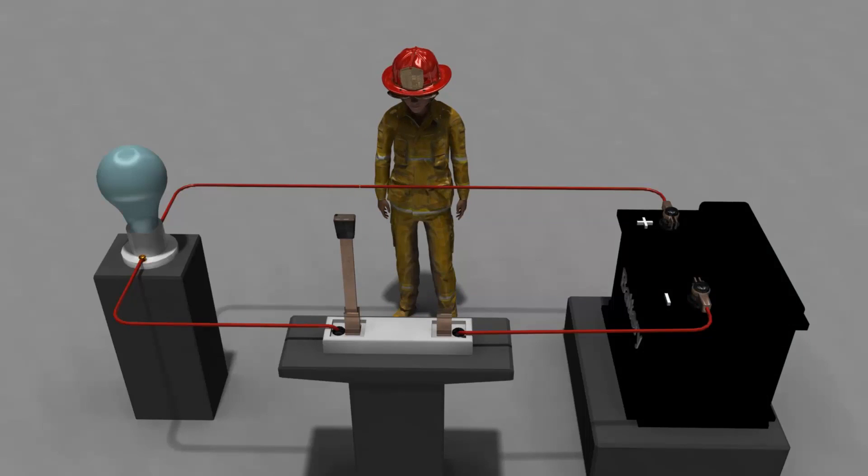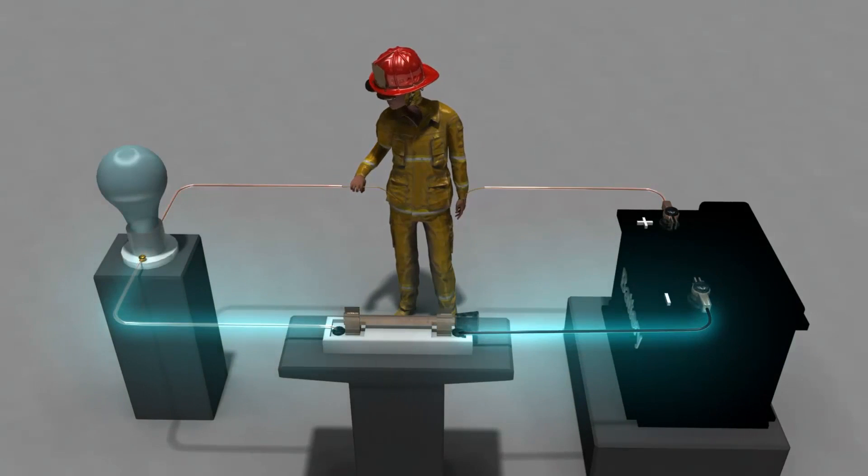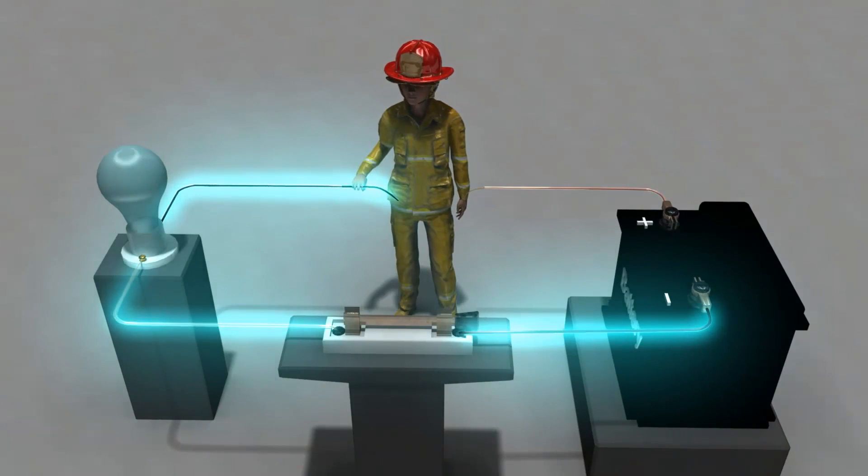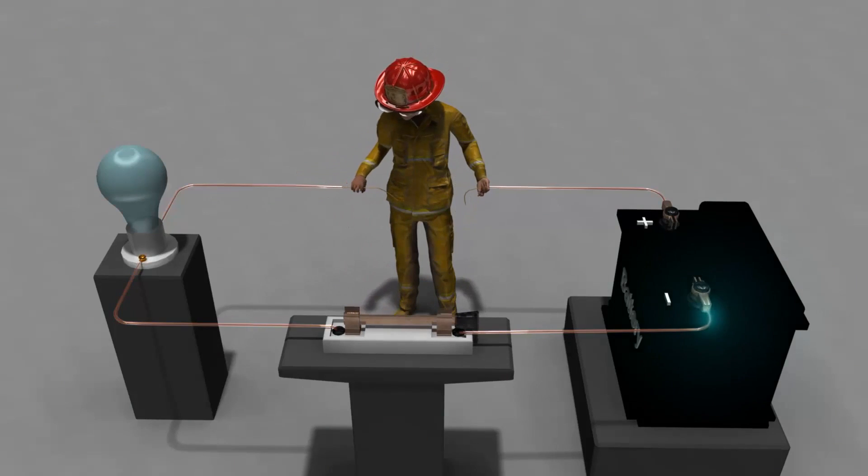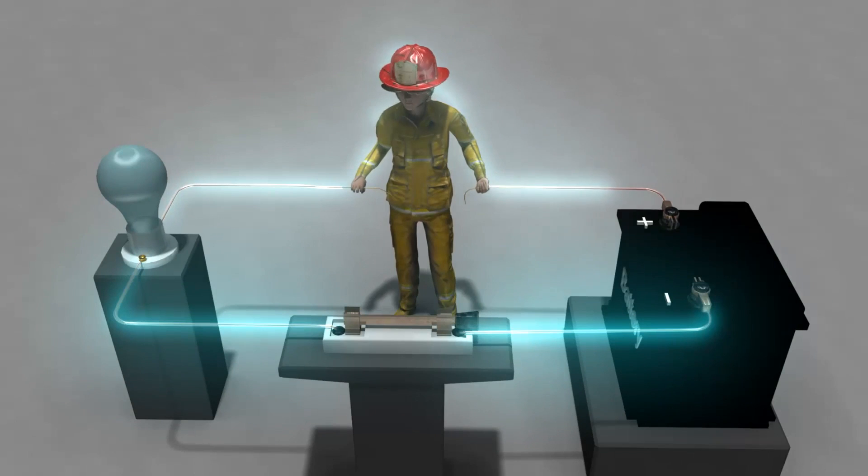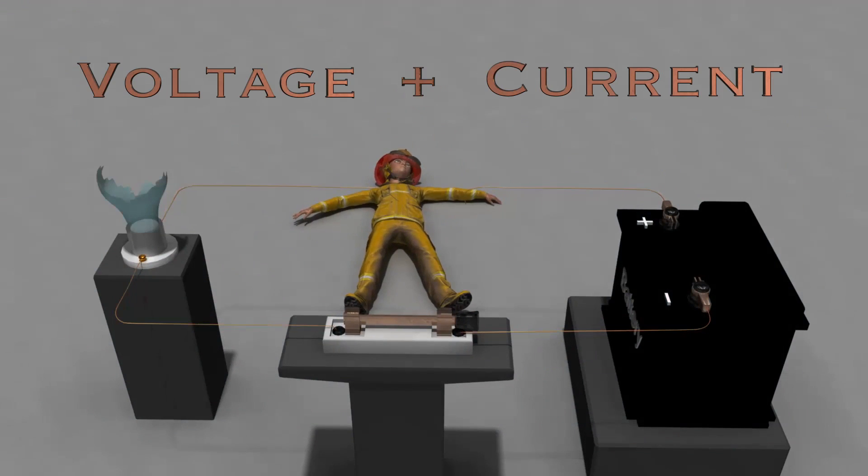Now imagine that same circuit, but now there's a break in the wires. If you touched one of the wire, would you get shocked? No, because the electricity wants to complete a circuit and by only touching one wire, you're not completing it. But if you touch both ends of the broken wires, you will have completed the circuit. Now again, getting shocked all depends on how much voltage and current is present in that battery.